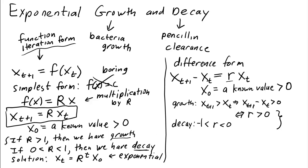And over here, we had that capital R had to be greater than 1 for growth and capital R had to be between 0 and 1 to get decay. How do we reconcile these two different viewpoints?